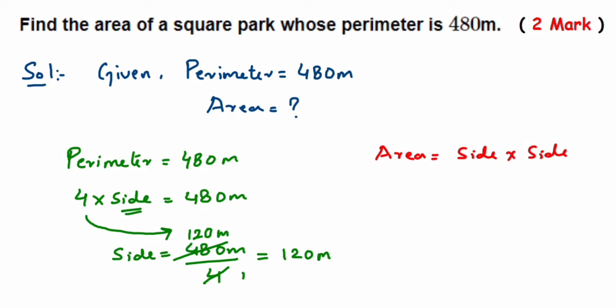So just multiply 120 two times. So 120 into 120, or just let me write down: 120 meters multiplied by 120 meters. Now see, it's very simple calculation. 12 times 12 is 144, so 144. And there are two zeros there, so we'll get two zeros here.